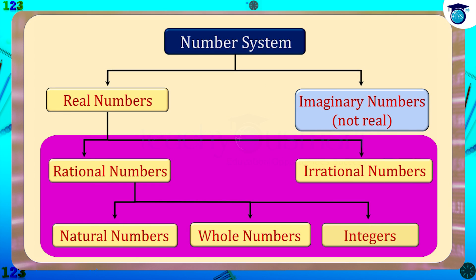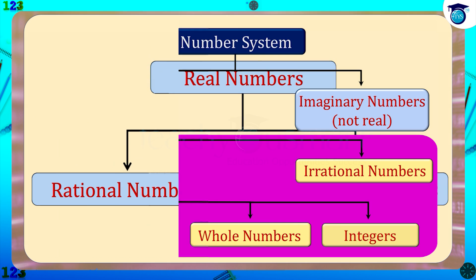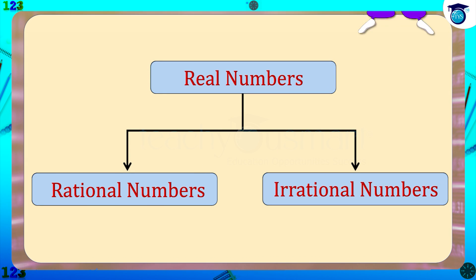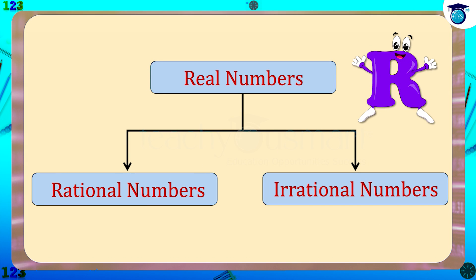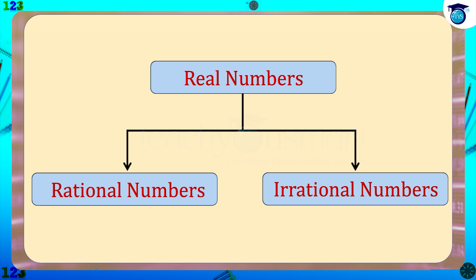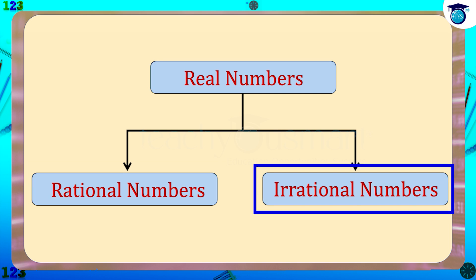The collection of all rational numbers and irrational numbers together form a system of real numbers, which is denoted by R. Therefore a real number is either a rational number or an irrational number.